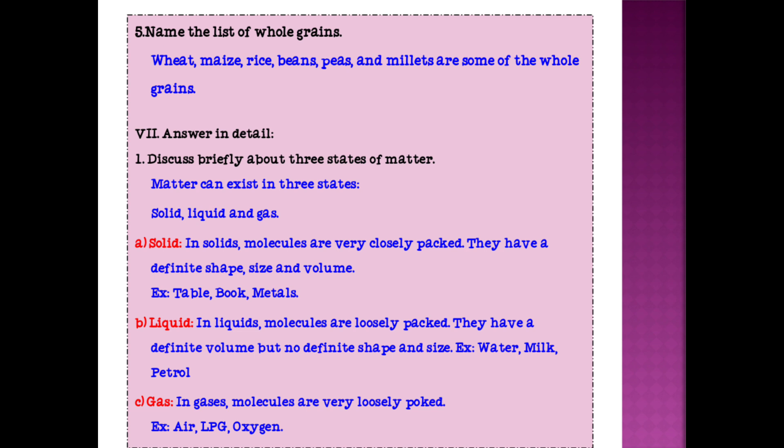Discuss briefly about three states of matter. Matter can exist in three states: solid, liquid and gas. First, solid. In solids, molecules are very closely packed. They have a definite shape, size and volume. Example is table, book and metals. Next is liquid. In liquids, molecules are loosely packed. They have a definite volume but no definite shape or size. Example: water, milk, petrol. And lastly the gas. In gases, molecules are very loosely packed. Example: air, LPG, oxygen. Sorry, there is a small spelling mistake here. Loosely packed, P-A-C-K-E-D, packed.